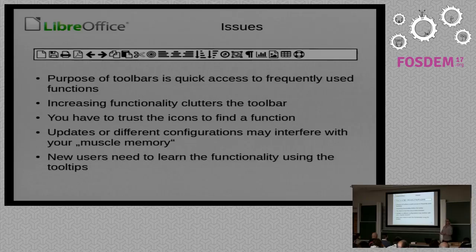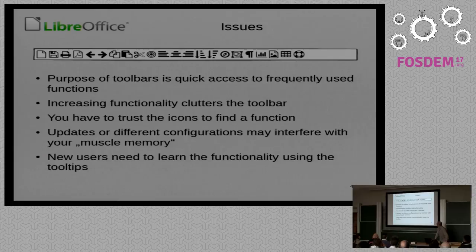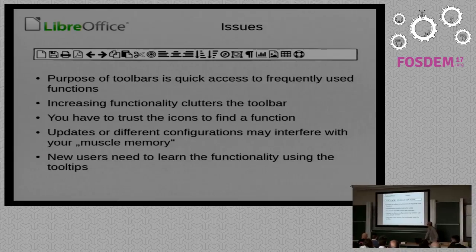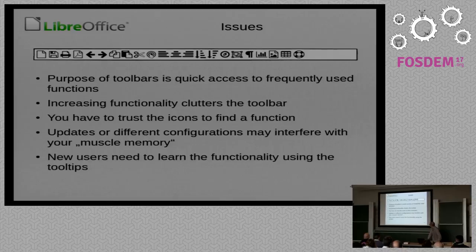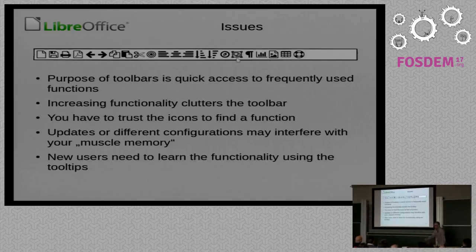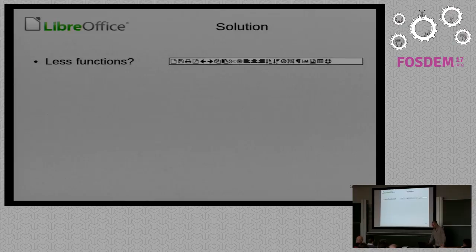And the worst part of all these things is that a new user is required to learn all this stuff. They have to look at the toolbar, get the tooltips from it, and understand what it means to show icons like this one. So what could you do to improve the usability facing all these issues? You could, of course, remove functionality from the toolbar — make it cleaner. It's a good approach, but I think developers are not so easy to convince to remove functionality from the toolbar.